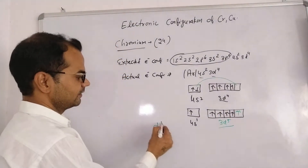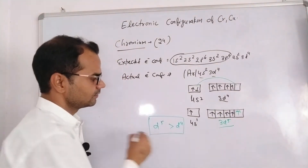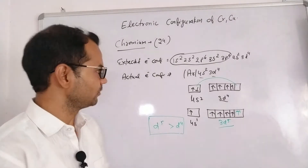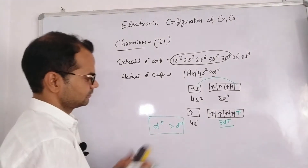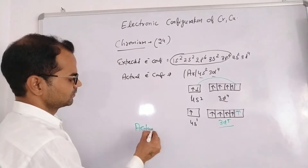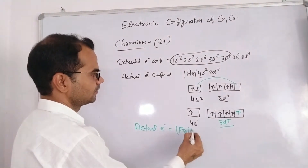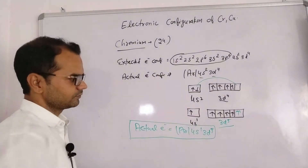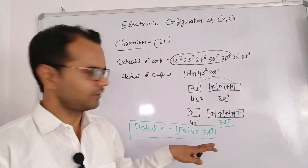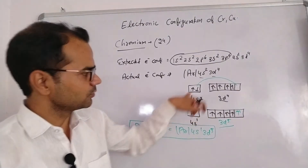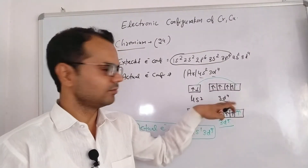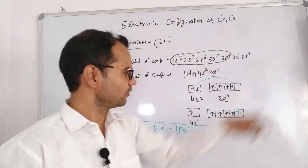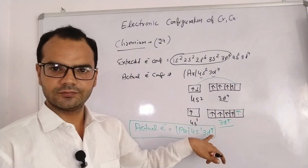Conclusion: d⁵ is more stable than d⁴ because it is half-filled, and d⁴ is nearest to the half-filled configuration. So the actual configuration of chromium is [Ar] 4s¹ 3d⁵. One electron is excited from the 4s orbital to the 3d⁴ orbital to make it more stable. We expected [Ar] 4s² 3d⁴, but the actual configuration is [Ar] 4s¹ 3d⁵.